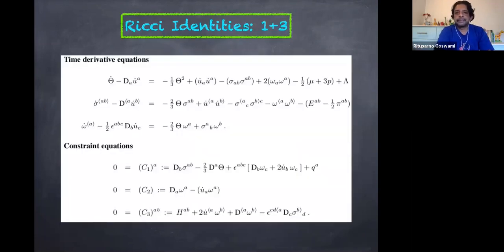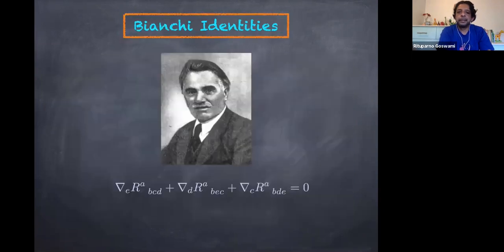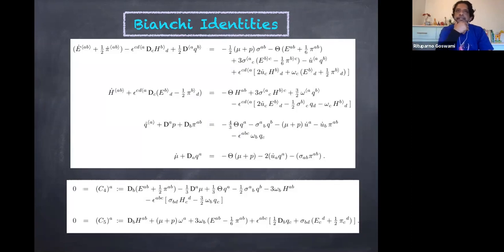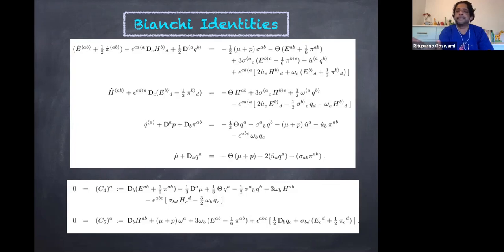Using the usual Ricci identities and doubly-contracted Bianchi identities, we get a set of equations. All these variables are covariantly defined, so whatever is zero in the background is by definition gauge invariant. If the background is FLRW, then all the Weyl curvature quantities, the shear, the vorticity, the heat flux, and the anisotropic stress are all zero in the background — and thus gauge invariant by definition. We don't have to think about that.